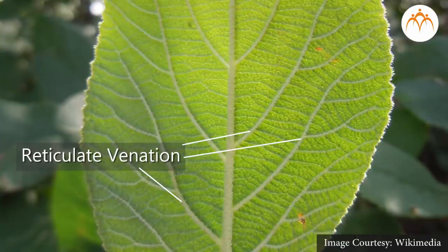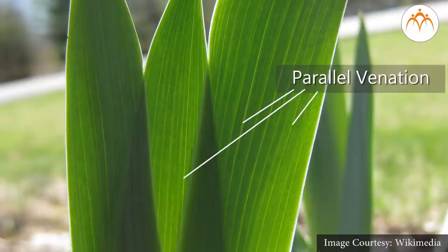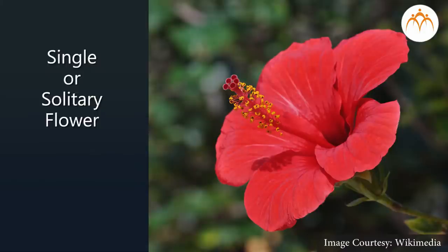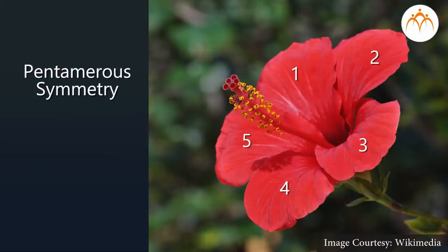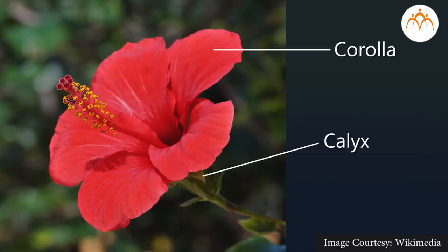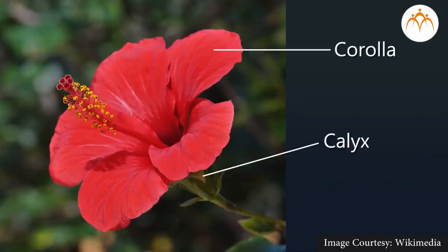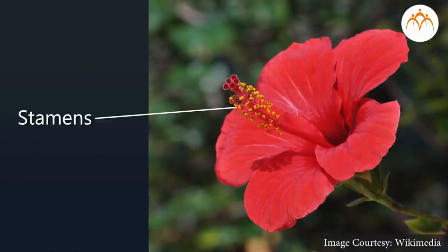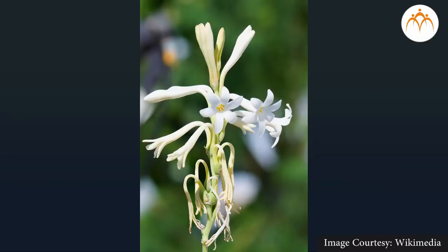Hibiscus leaves show reticulate venation; tuberose leaves show parallel venation. Hibiscus flowers are produced singly — solitary — on the stem, and they do not have fragrance. Parts of the flowers are in multiples of five, hence pentamerous symmetry. Flowers have a stalk, and hibiscus flowers have separate calyx and corolla, with numerous stamens.